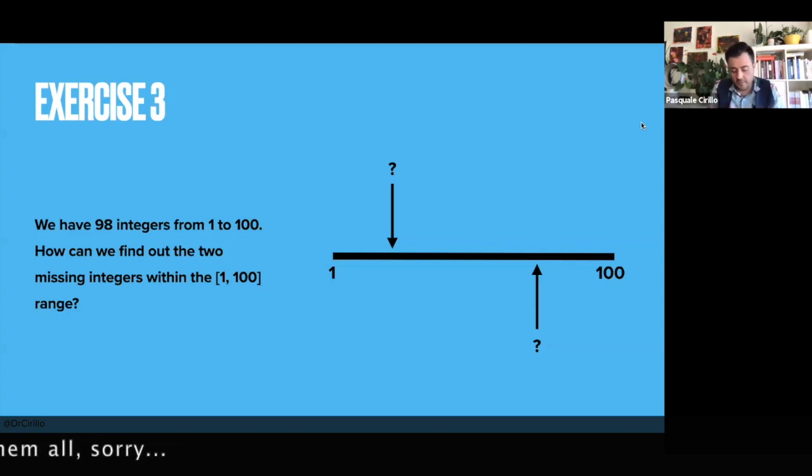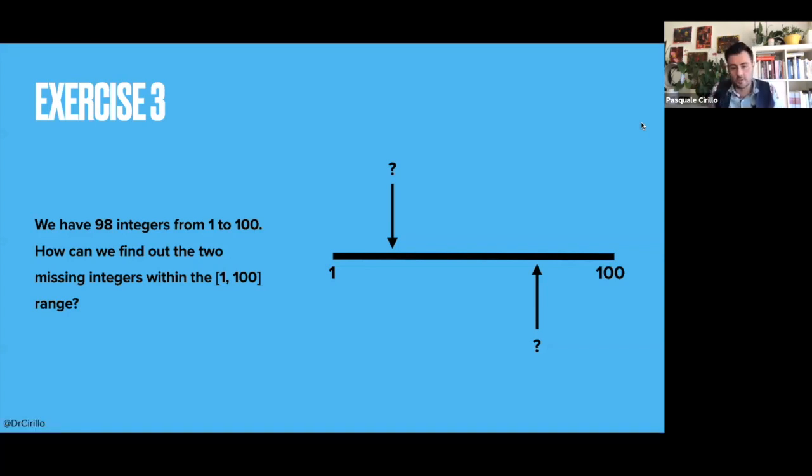Because obviously, if I order all my integers at a certain point, I will find a gap, and that is a missing integer, but you don't want to do that. You want to find a way to find out what are the missing integers using results that you know from mathematics.